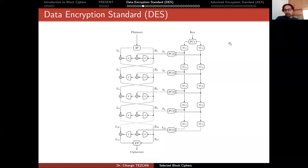Now that we have a main idea about this, we can look at the inner workings of the algorithm. This is the big picture. We have a key schedule here which consists of two permutations PC1 and PC2 and only rotations — sometimes one bit to the left, sometimes two bits to the left. We have initial and final permutation which actually has no cryptographic importance. We have the expansion algorithm, the S-box, and the permutation layer.